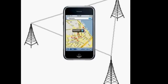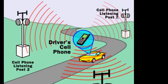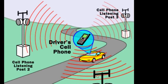Each tower, which is called a Base Transceiver Station or BTS, has its own Tower ID called a Cell ID. As soon as a tower gives access to a cell phone, that Cell ID or Tower ID is automatically displayed on the tracking software, showing which tower is currently serving that phone. This tells the police which area the phone is in.